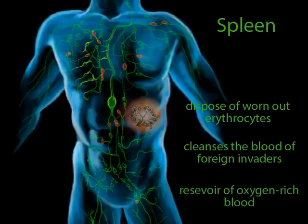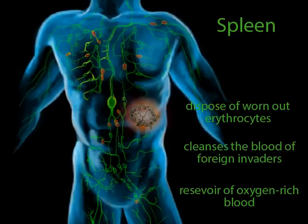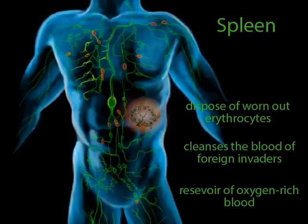The third function of the spleen is to act as a reservoir for oxygen-rich blood. The spleen holds more blood than is necessary for its own metabolism, serving as a backup supply full of oxygen and nutrients in case of blood loss. If the body detects hemorrhage, the sympathetic division of the ANS stimulates the smooth muscles in the capsule of the spleen to contract, pushing the backup blood supply into the bloodstream to compensate for the loss. Seals actually use the spleen as a built-in oxygen tank — when running low on oxygen and unable to surface, the smooth muscles of the spleen contract, sending oxygen-rich blood into the bloodstream to give the seal more time before it must surface to breathe.